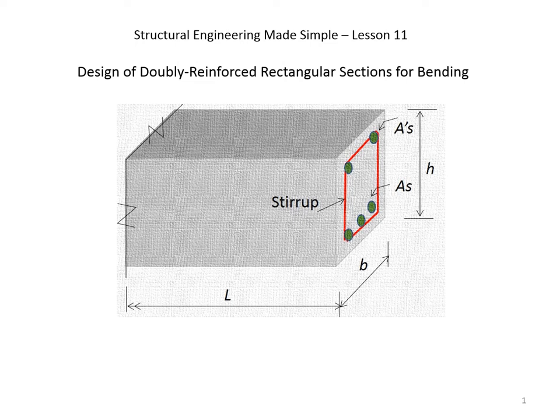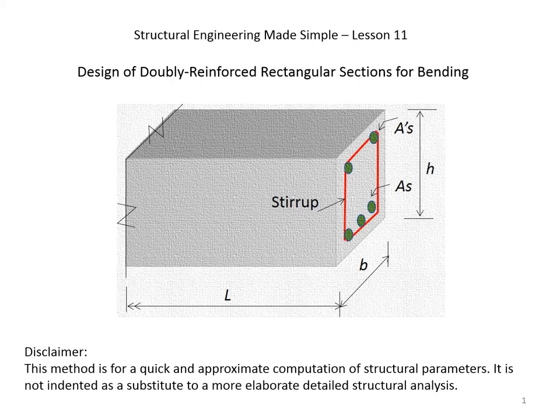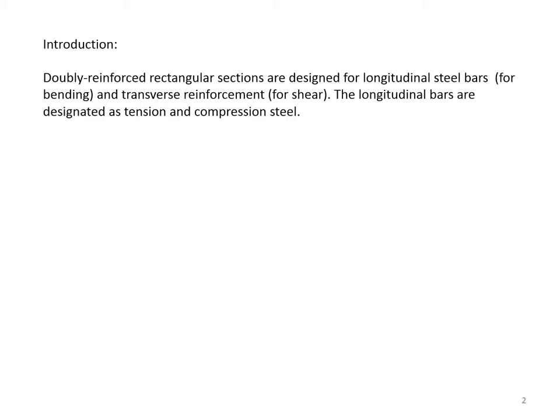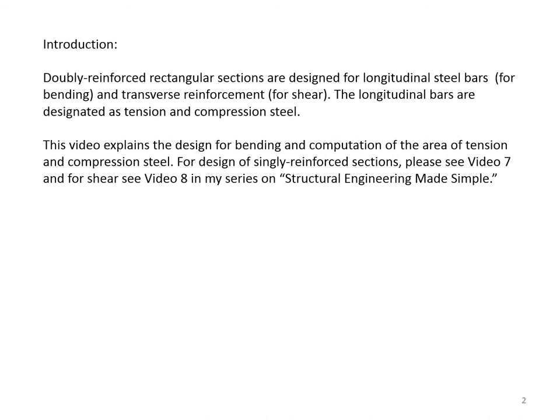In my Structural Engineering Made Simple series, today I would like to talk about the design of doubly reinforced rectangular sections for bending. Doubly reinforced rectangular sections are designed with longitudinal steel bars for bending and transverse reinforcement for shear. This video explains the design for bending and the computation of the area of tension and compression steel. For design of singly reinforced sections, please see video 7, and for shear see video 8 in this series.